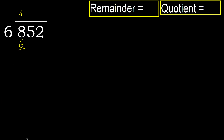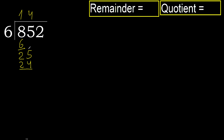8 minus 6 is 2, next: bring down 25. 6 multiplied by 5 is 30 — greater. Multiplied by 4 is 24 — not greater, ok. Subtract: 25 minus 24 is 1, next.